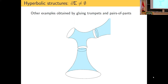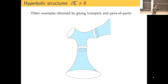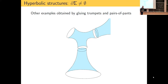More examples come from gluing hyperbolic pairs of pants and trumpets. A basic fact in hyperbolic geometry is that if you have a pair of pants and prescribe three lengths to its boundaries, there exists a unique hyperbolic metric — up to diffeomorphism — with those boundaries as geodesics of the prescribed lengths. You can then glue pairs of pants together (as long as lengths match), glue in trumpets, and when gluing you can also rotate, giving many different examples.